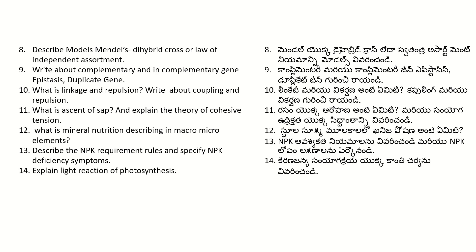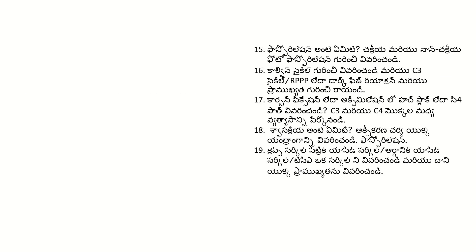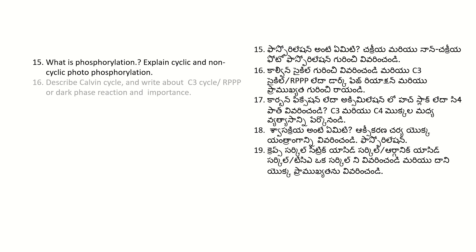Explain the light reaction of photosynthesis. What is phosphorylation? Explain cyclic and non-cyclic phosphorylation. Describe the Calvin cycle and write about the C3 cycle or RPP or dark phase reaction and its importance.